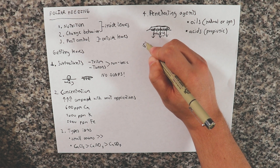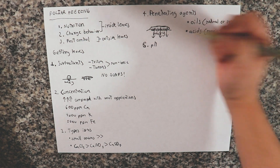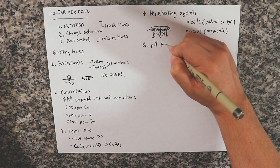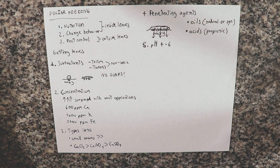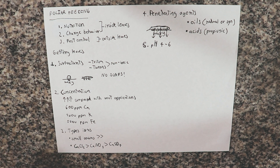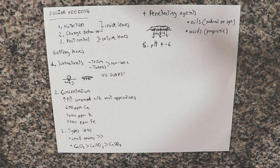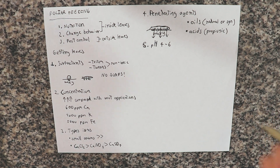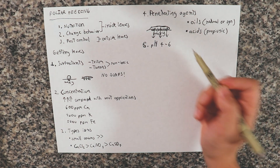The fifth thing to consider is pH. To get things into leaves we want the pH to be between 4 and 6, which gives better absorption. Leaves are not roots so the range of pH values tolerated is much wider. While roots generally tolerate pH 5.5 to 6.5, for foliar applications a pH of 4 to 6 is what we want.